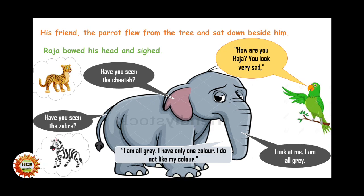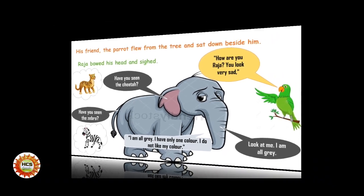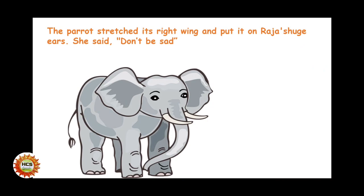Raja was sad because he did not like his grey colour. He said to the parrot — the parrot was the friend of Raja — 'Look at the cheetah, it has beautiful brown colour with black spots. Look at the zebra, it has beautiful white colour with black stripes. But I am all grey. I have only one colour and I do not like my colour.' The parrot stretched its right wing and put it on Raja's huge ear and said, 'Don't be sad.'